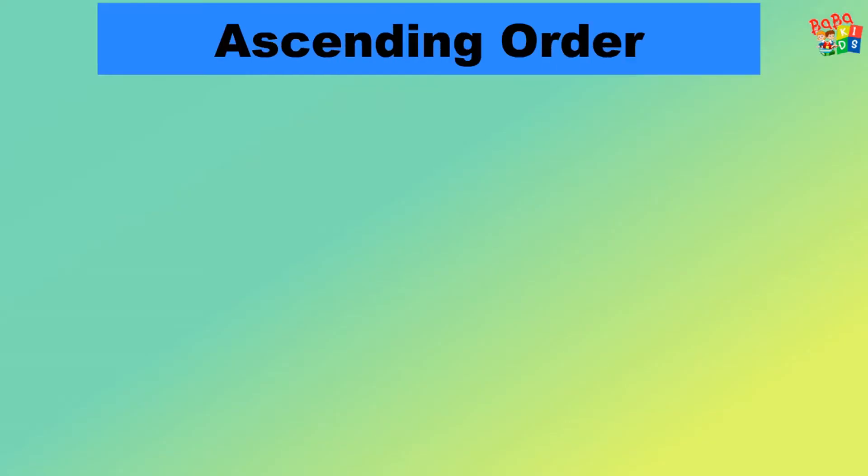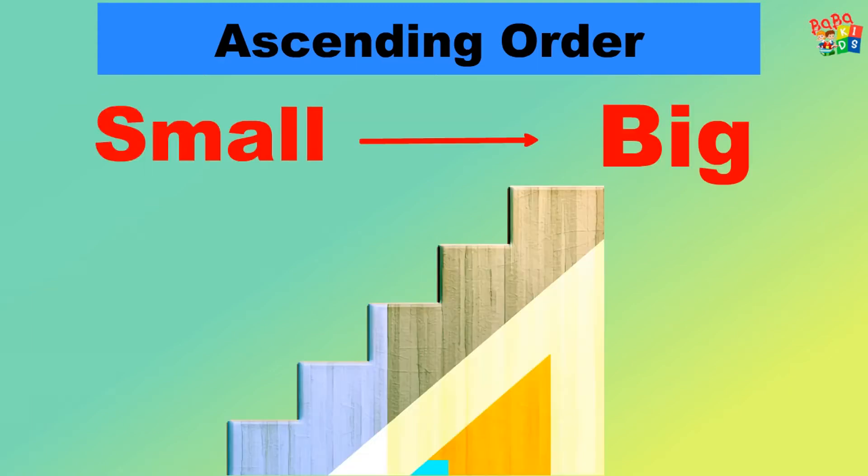Ascending order. Ascending order means arranging numbers from small to big, or when we move from downstairs to upstairs, it is called ascending order.